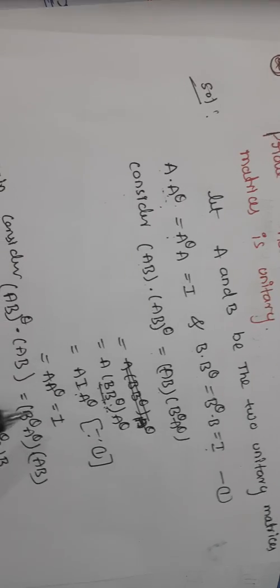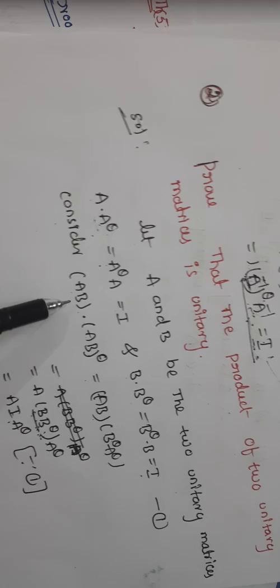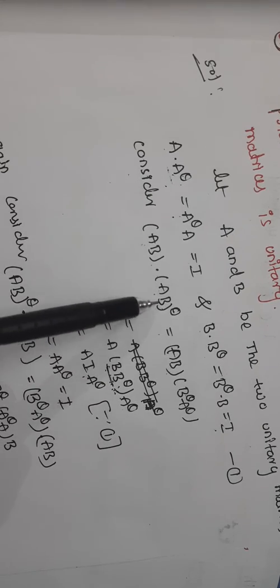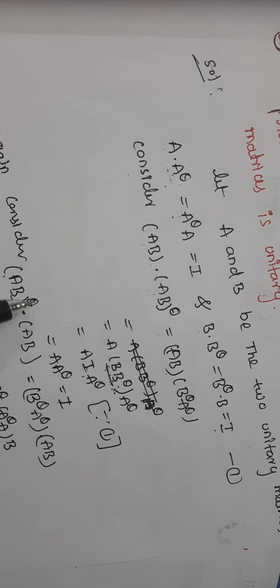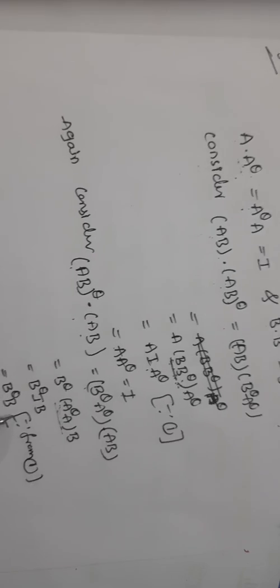This is I. Then, A B to the power theta equal to I. When I take this, its value is I. Again, I will consider the reversing order. A B to the power of theta into A B. Same like, apply this is I.